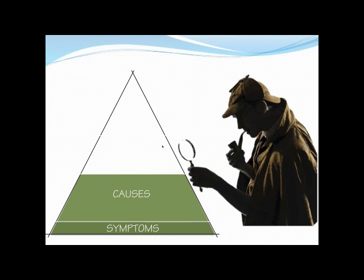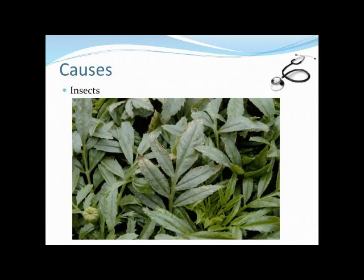The next thing I want to cover is the causes — what can cause some of these symptoms? Obviously we know it's probably some type of nutrient deficiency, but what's causing those deficiencies? I want to show you this marigold — it does look a lot like a nutrient deficiency, maybe potassium deficiency with necrosis on the edges of the older leaves. But in actuality this is an insect problem. If we looked at the whole crop, there's no real distinct pattern — it's very random. Just because it looks like a nutrient deficiency at the leaf level, you need to look at the whole crop.